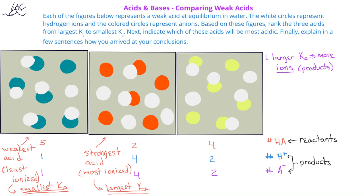The second image will have the largest acid ionization constant, since it has more products, ions, and fewer reactants or weak acid molecules that are undissociated.